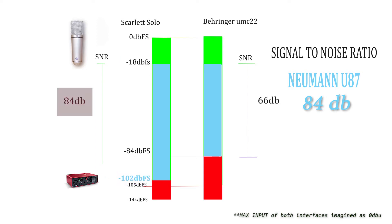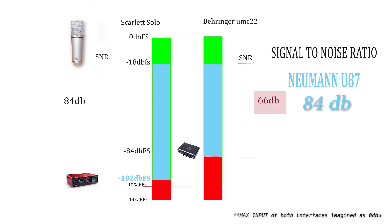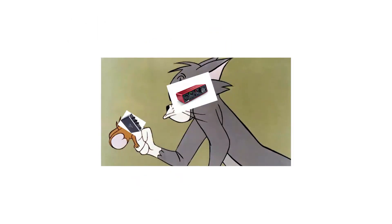In the ideal case, the Scarlett Solo interface can accommodate up to 0 to 105dB range. If connected to a Behringer UMC22, the SNR will be reduced — since in the ideal case it can only accommodate 0 to 84dB range. So the noise floor of the interface being above the noise floor of the mic setup, the new noise floor will be at -84dBFS and the effective SNR will be reduced to 66dB. Again the 24-bit Scarlett Solo is a clear winner — right?